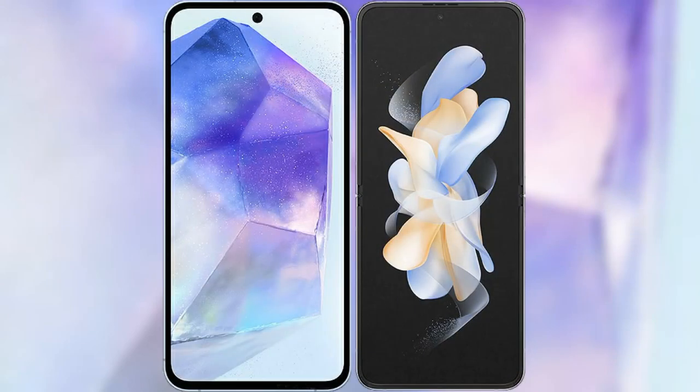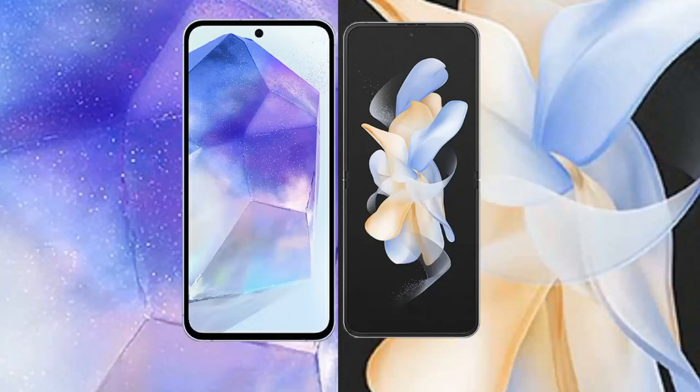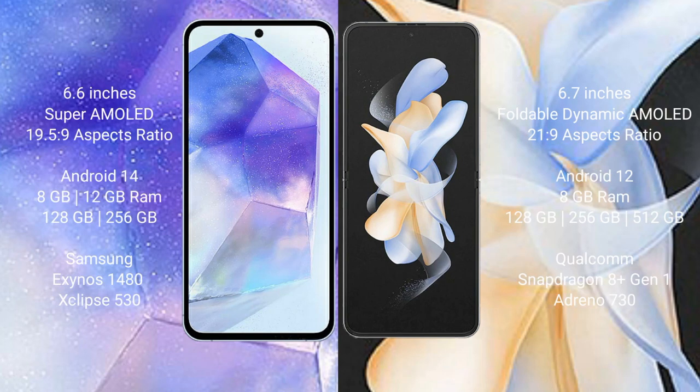I will compare the new Samsung Galaxy A55 with Samsung Galaxy Z Flip 4. Samsung Galaxy A55 comes with a 6.6-inch Super AMOLED display and aspect ratio 19.5:9. Samsung Galaxy Z Flip 4 comes with a 6.7-inch Foldable Dynamic AMOLED display and aspect ratio 21.9.